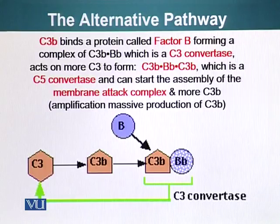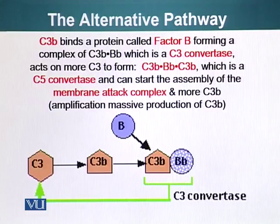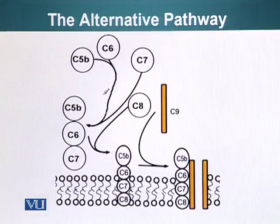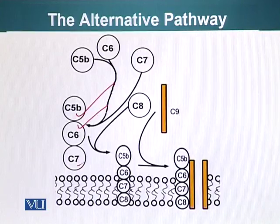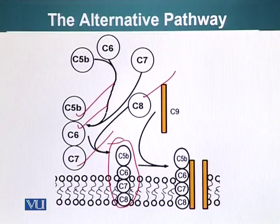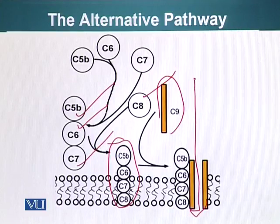So this is the alternative pathway. Even in the absence of C1 protein that we saw in the classical pathway, our body has devised another strategy to destroy the pathogens. C5B, once cleaved, will bind C6, C7, and C8, and this will initiate the membrane attack complex, which will ultimately recruit C9, which will form pores in the surface of the pathogen.